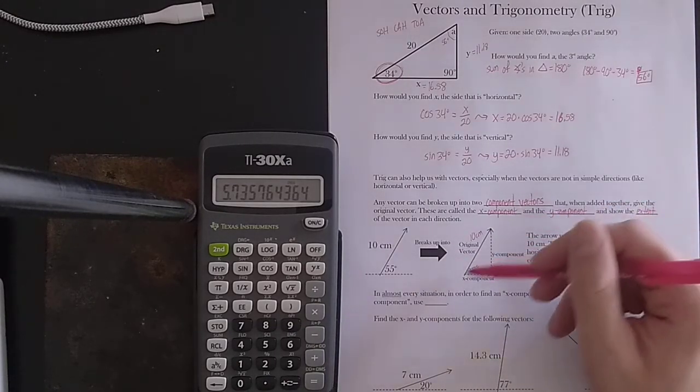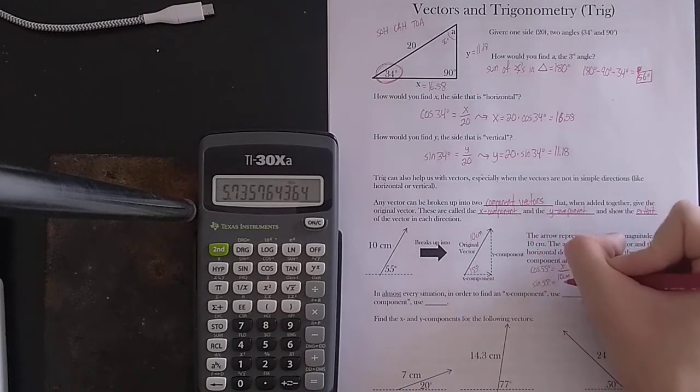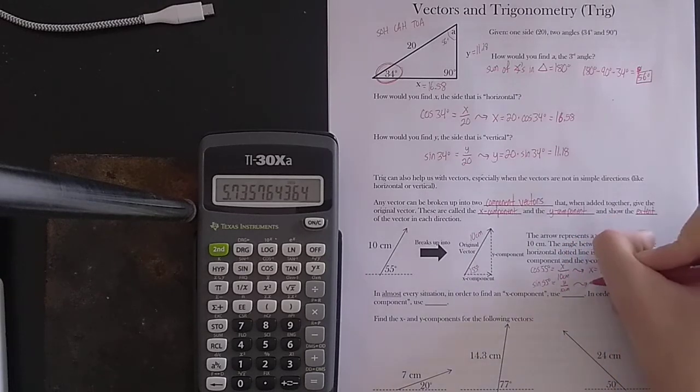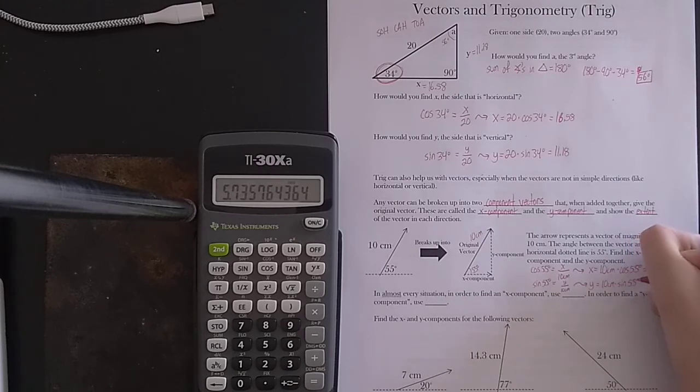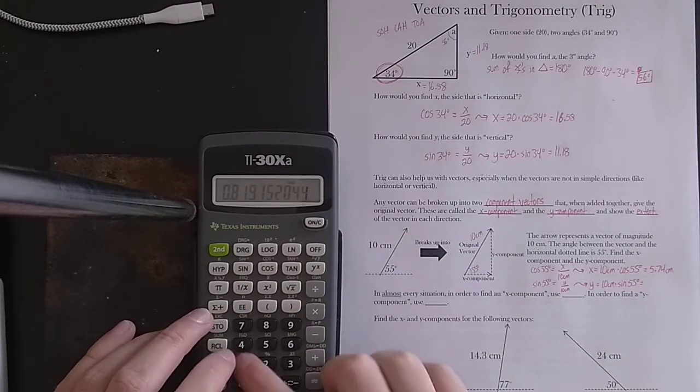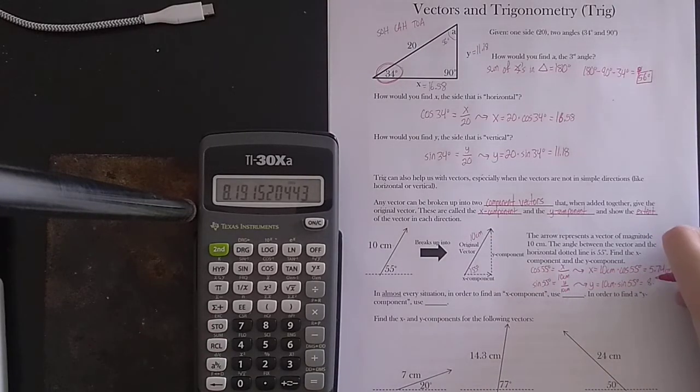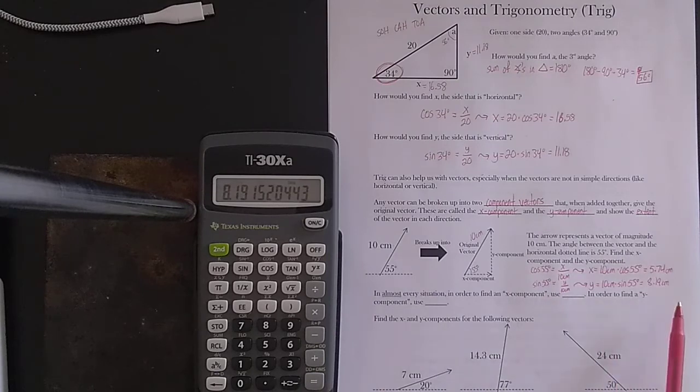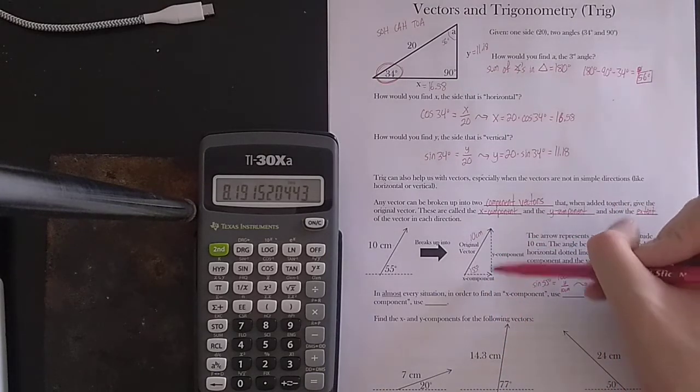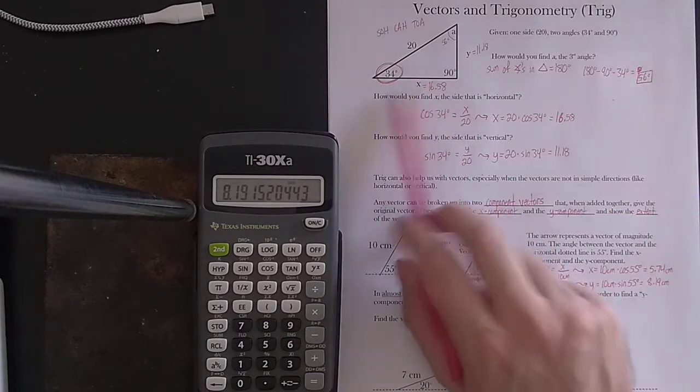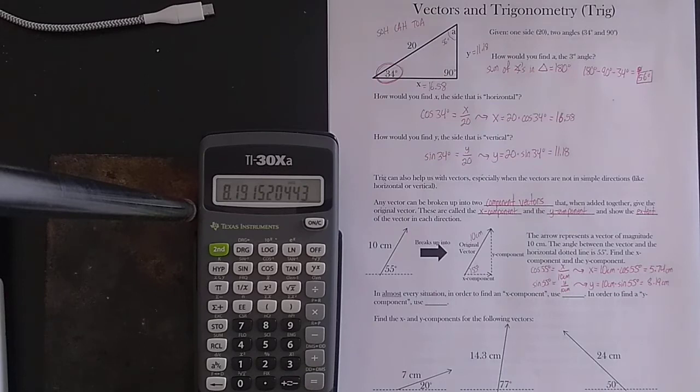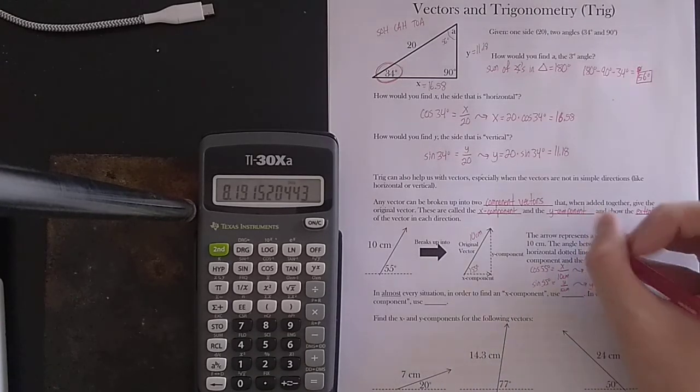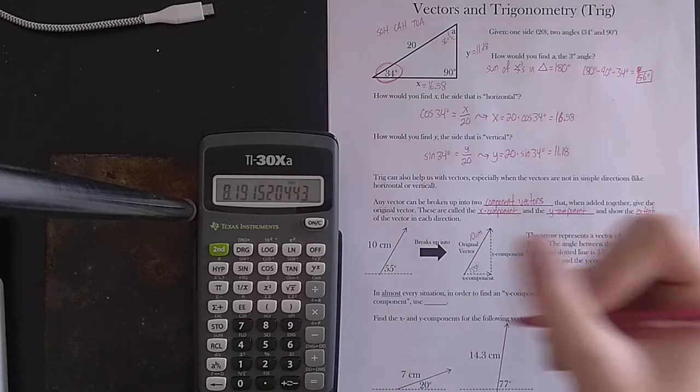I can do the same thing for the y component. In this case, this is the opposite side, and I still know the hypotenuse, so I'm going to use the sine of 55 degrees. That's equal to y over 10 centimeters, opposite over hypotenuse, equals y, or y equals 10 centimeters times the sine of 55 degrees. And that's 8.19 centimeters. Notice that the y component this time turned out to be bigger than the x component. If you look at the picture, the y component looks a little bit longer. If you go back up here, the x component looks a little bit longer, and that turned out to be more. So, I'm sensing a pattern here. In almost every situation, in order to find an x component, you are going to use cosine. And in order to find the y component, you are going to use sine.